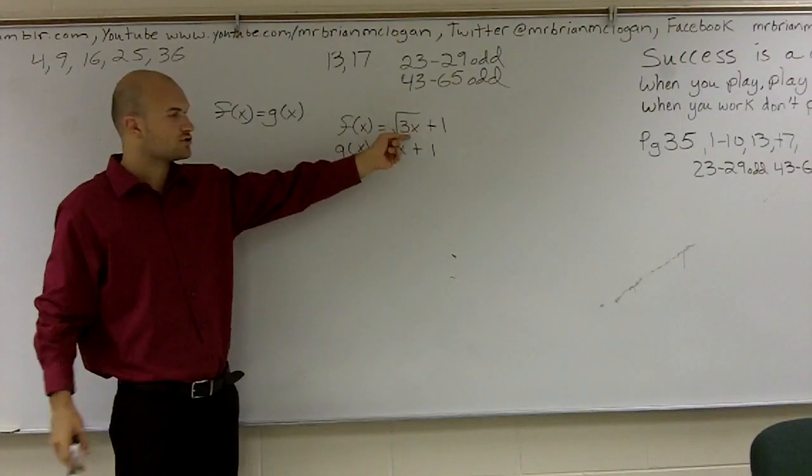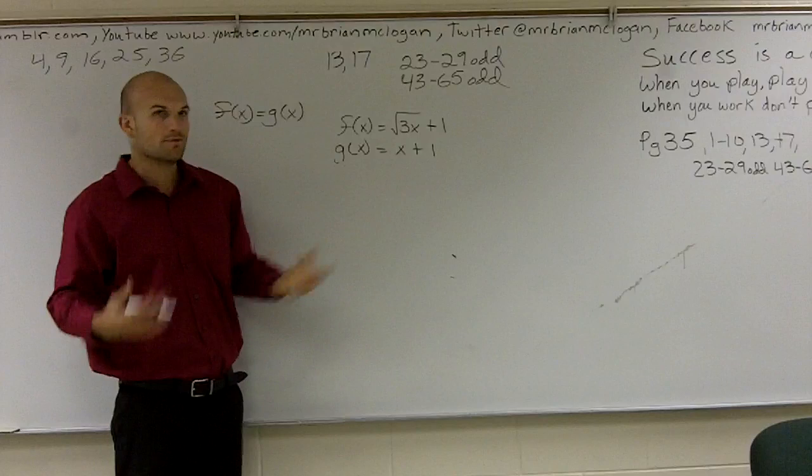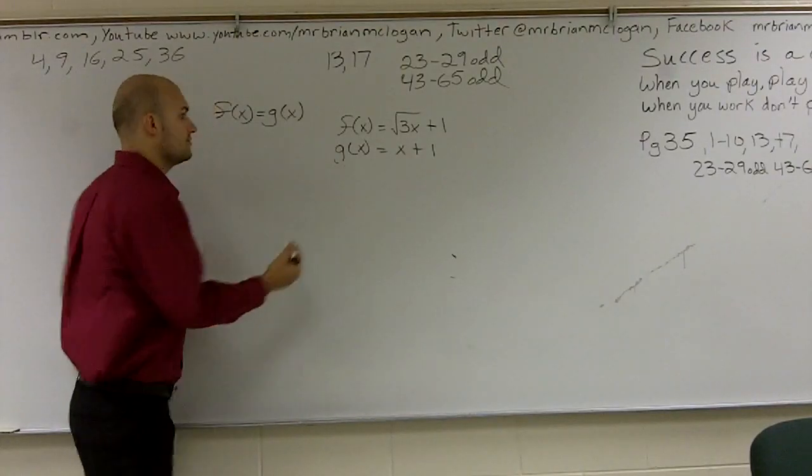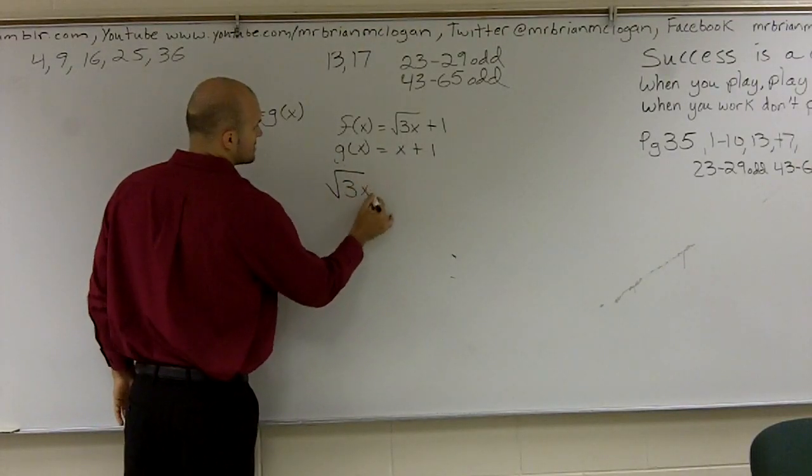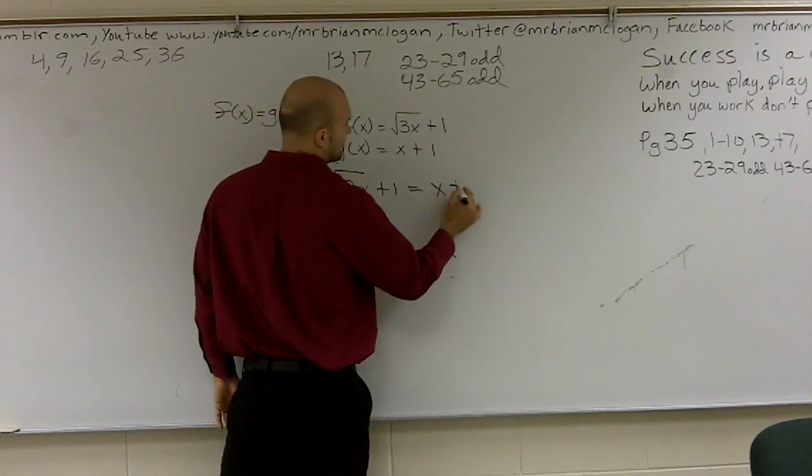So we know f of x is the square root of 3x plus 1 and g of x is x plus 1. So if we want them to equal each other, we're just going to write square root of 3x plus 1 equals x plus 1.